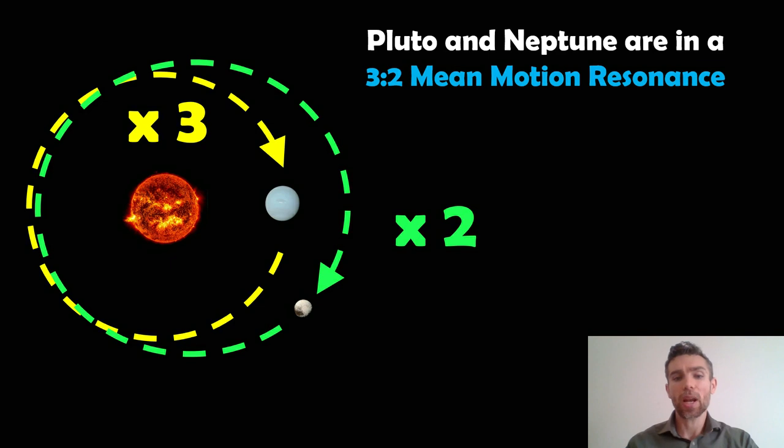An example is Pluto and Neptune. Pluto and Neptune are in a three-to-two mean motion resonance. Neptune goes around three times for every two orbits of Pluto. We also know that Pluto actually crosses Neptune's orbit. It's this mean motion resonance that keeps it in this unusual orbit. These gravitational perturbations are interacting and keeping it where it is.